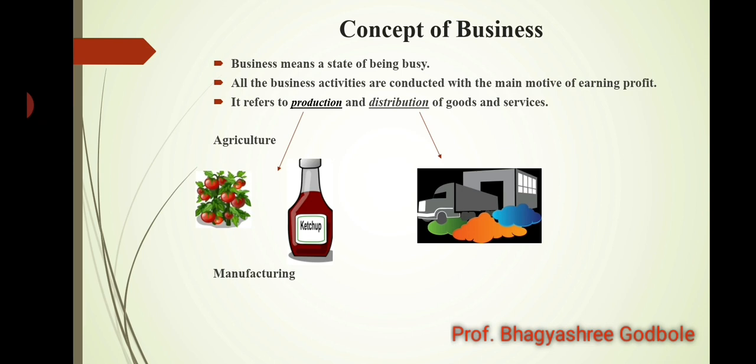All these services fall under the category of distribution. So a combination of production and distribution of goods and services is business in simple words, and we are doing this in order to earn profit — to acquire wealth by satisfying consumers' or human wants.